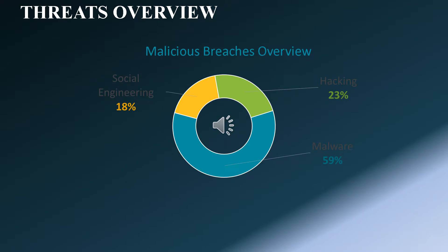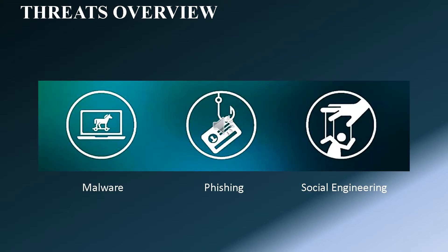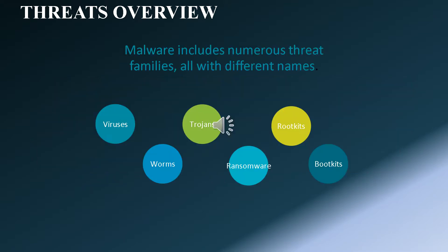Malicious threat is categorized into three types: 1. Malware, 2. Hacking, 3. Social engineering. Malware has the biggest contribution to data breaches among the threats. Let's dive into the Threats Overview, which covers the subtopics of malware, phishing, and social engineering.